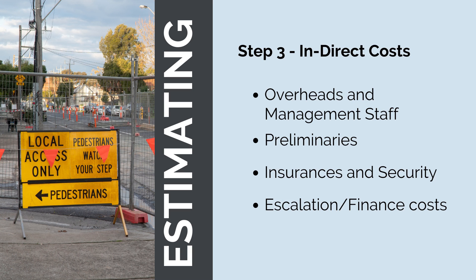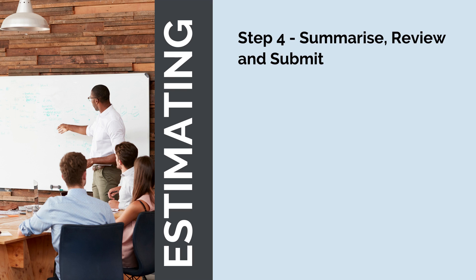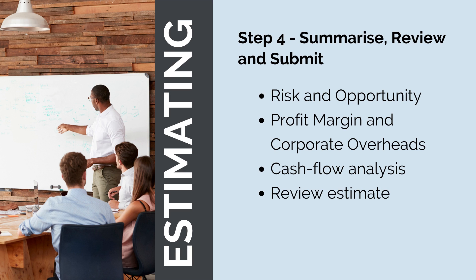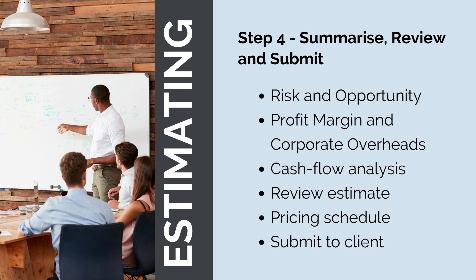Once we've priced our direct and indirect costs, we've got our total project costs. The next step is to summarise, review and submit our estimate to the client. We need to first complete our risk and opportunity assessment — understanding our known unknowns and unknown unknowns to work out a reasonable amount of contingency funds. We'll then add a profit margin and corporate overheads to calculate the price we submit to the client, and complete a cash flow analysis to ensure we're cash positive. Before submission, the estimate will be reviewed by management to ensure accuracy — for example, that a $200 million bid won't result in $250 million in actual costs. When everybody is happy, we'll fill out the client pricing schedule and submit the estimate.